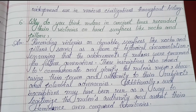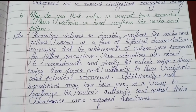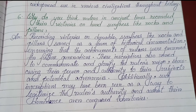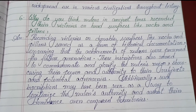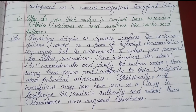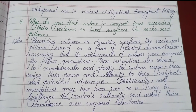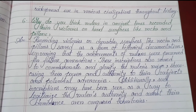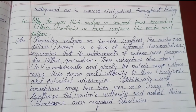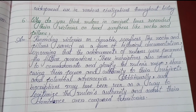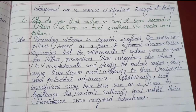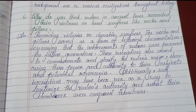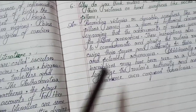Number six: Why do you think rulers in ancient times recorded their victories on hard surfaces like rocks and pillars? Recording victories on durable surfaces like rocks and pillars served as a form of historical documentation, ensuring that the achievements of rulers were preserved for future generations. These inscriptions also served to commemorate and glorify the ruler's reign, showcasing their power and authority. Additionally, such inscriptions may have been seen as a way to legitimize the ruler's authority and assert dominance over conquered territories.